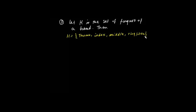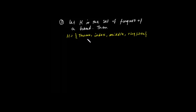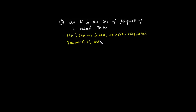There we go. In English: thumb, index, middle, ring, little. Thumb is an element of H, index is an element of H, and so on.